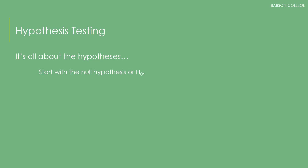You start with the null, or HO, and you determine the alternative hypothesis H1. Don't forget that the null is the status quo or the assumed normal situation, and you're collecting evidence to prove that the alternative is true.